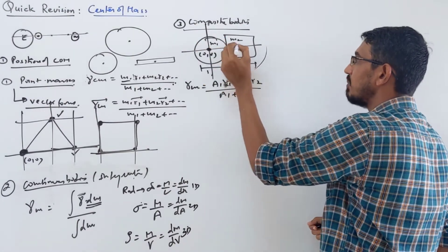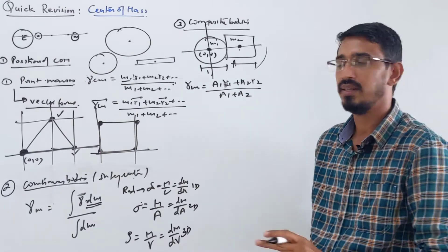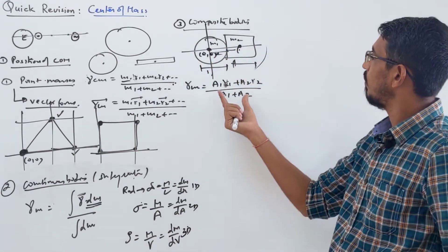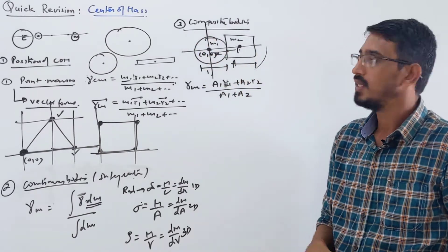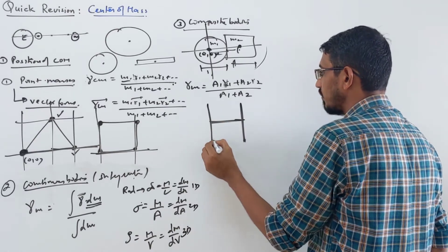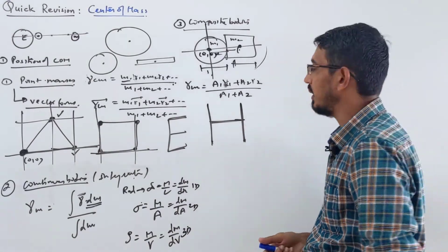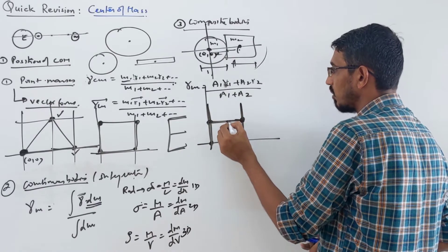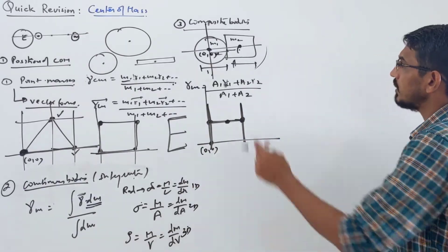You locate the individual center of mass of each body, choose a coordinate system, write the coordinates, and apply the formula in terms of area — area of the disc is πr², area of the square is a². Put these values in and you get your answer. For example, if 3 rods are arranged in the form of H or letter E, choose the origin, find the individual center of mass of each rod — which is its midpoint — write coordinates with respect to that origin, and apply the same formula. This gives you the center of mass of the composite arrangement.